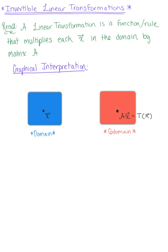Here we're looking at an introduction to invertible linear transformations. We want to start by recalling that a linear transformation is a function or rule that multiplies each vector x in the domain by a matrix A.